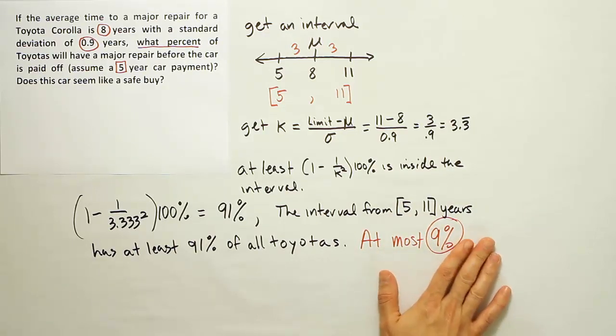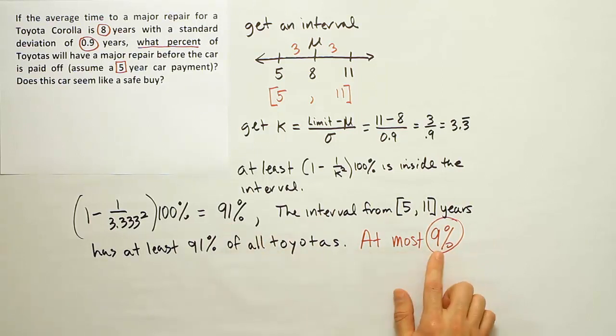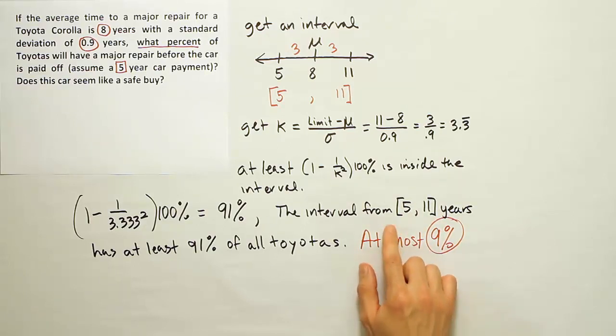But what we can say is that since at least 91% of the values are inside the interval, it's at most 9% that's outside the interval. And again, in case you didn't catch why it's at most 9%, 91 and 9 make 100. So if there's at least 91% in here, there's at most 9% that's outside of the interval. Therefore, at most 9% that can be below 5, right?